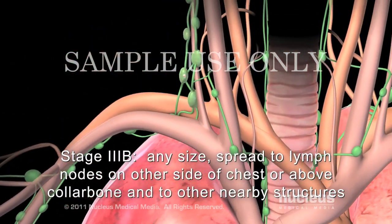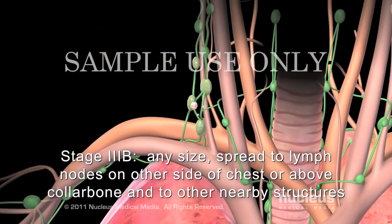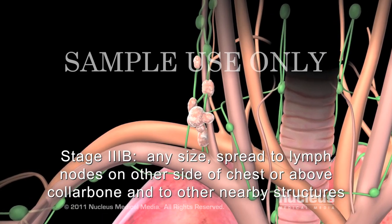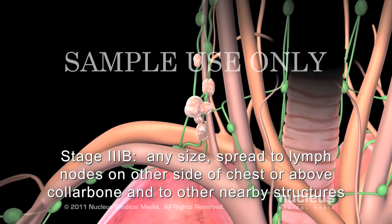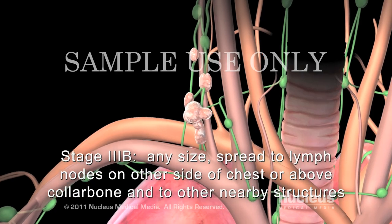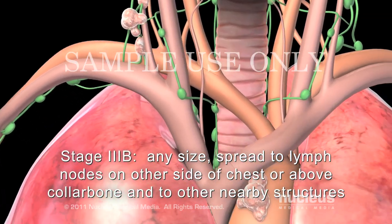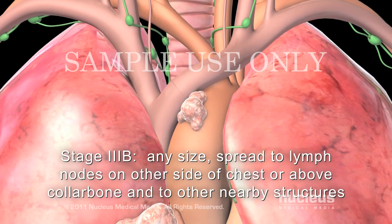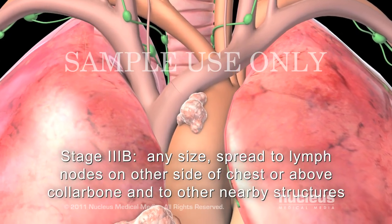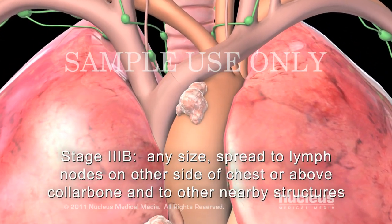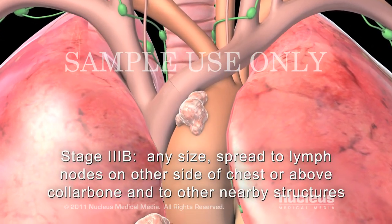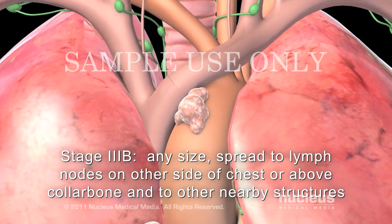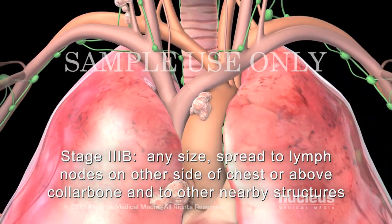In stage 3b, the tumor may be any size and has spread to lymph nodes above the collarbone or on the other side of the chest. The cancer may have spread to nearby structures such as the heart, major heart vessels, diaphragm, lung, chest wall, trachea, esophagus, breastbone, or to more than one place in the same lung.